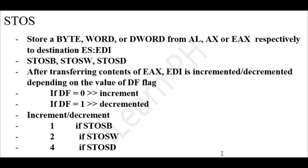After transferring the contents of EAX, AL, or AX to EDI, then EDI will be incremented or decremented depending on the value of the DF flag. If the DF flag equals zero then you will increment EDI, and if DF equals one then you will decrement EDI.